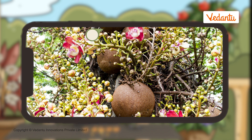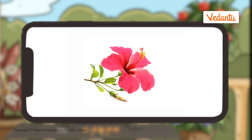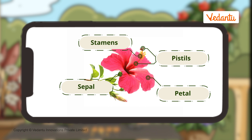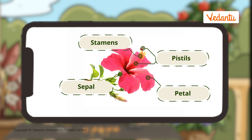Let's do a quick recap of the parts of a flower. This is the outermost sepal, the prominent petal, the stamen and the pistil. The stamen has a filament and the anther. The pistil has the stigma, the style, and the ovary.